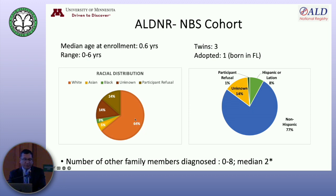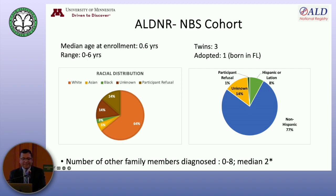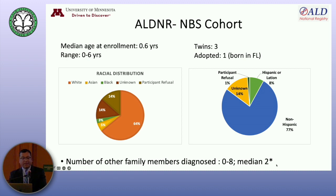Looking at the racial distribution, 64% are white. There is a small proportion of unknown or participant refusal, which is inherent to any survey. We have, interestingly, three twins and one child that was born in Florida but was adopted by a family. This is one of the beauties of this national registry — we are not limited by states. We cross borders, and we loop back this information to the newborn screen programs. We also look at how many other family members were diagnosed because of the index case. It is ranging between zero to eight, with a median of two, and we capture this every six months.